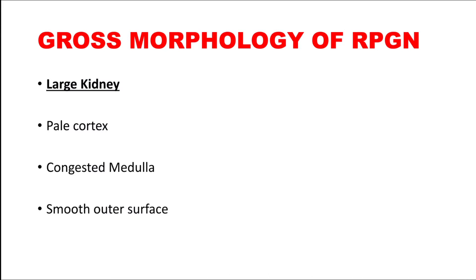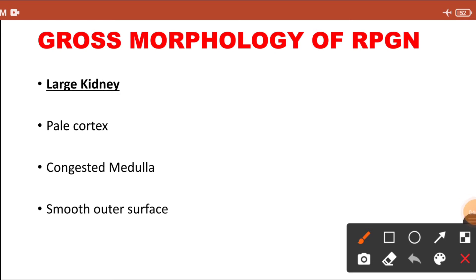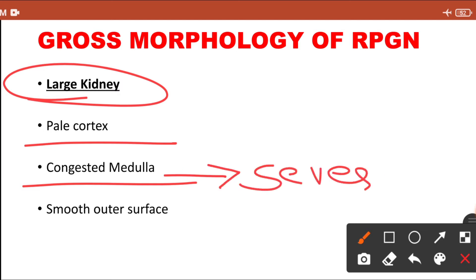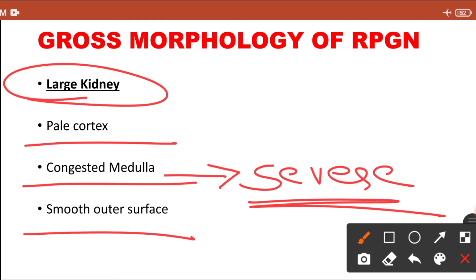Now the gross morphology of rapidly progressive glomerulonephritis — how the kidney will look grossly. It is a severe form of glomerular nephritis, so there will be inflammation causing more exudation of fluid and redness. The kidney is enlarged in size. The cortex is pale, but if you cut the kidney there is a congested medulla because of severe inflammation of the glomerulus. The outer surface is smooth.